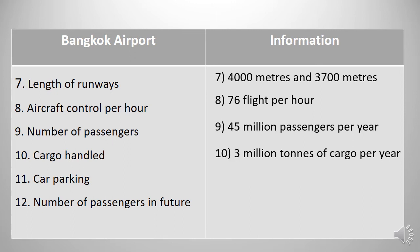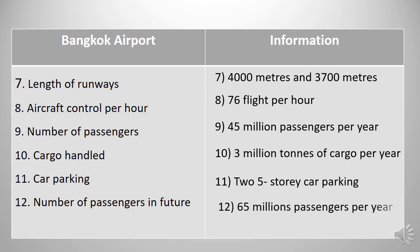Number eleven, car parking — it has two five-storey car parking buildings. Point number twelve, number of passengers in future — it will raise its capacity to handle 65 million passengers per year. And this is the activity based on the reading text.